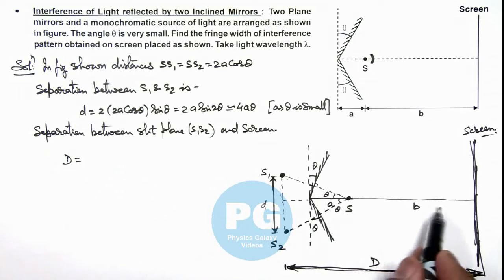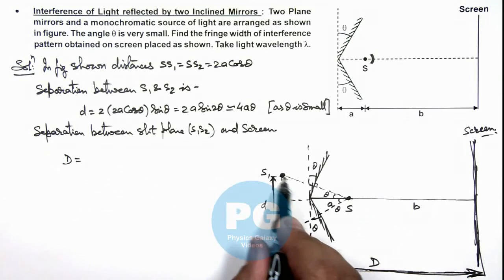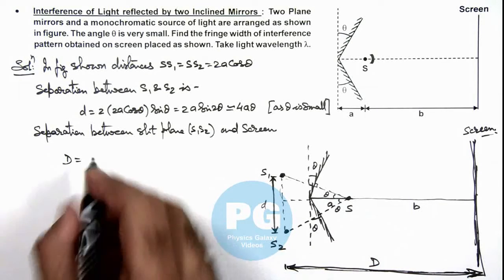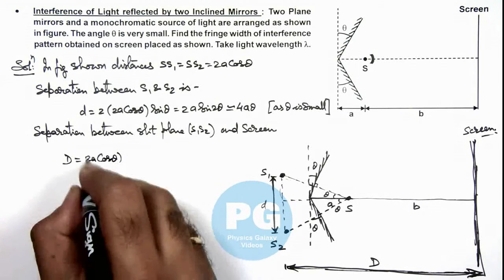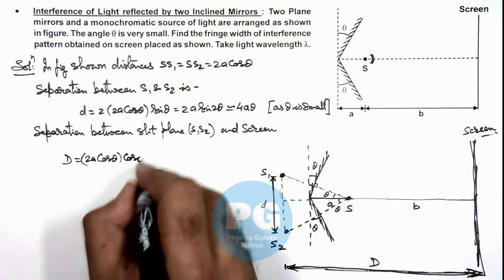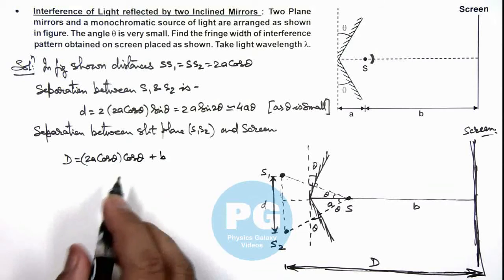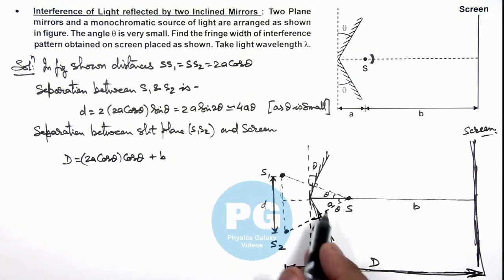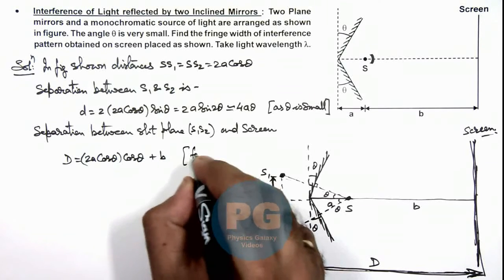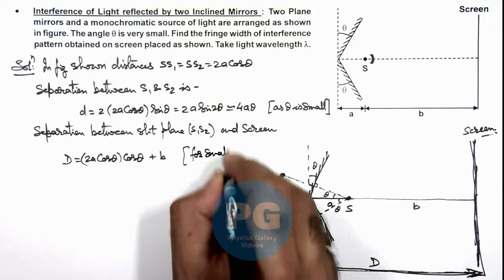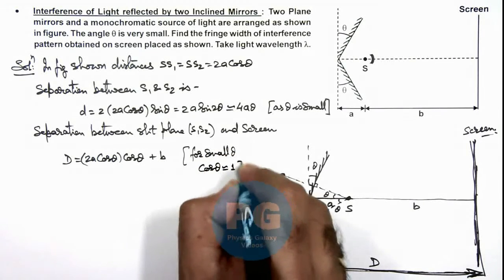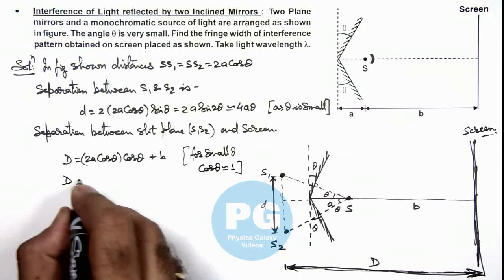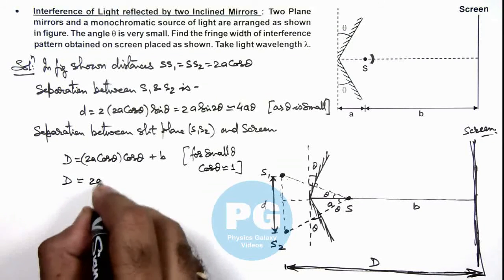This b plus this can be written as 2a cos theta times cos theta, so this can be written as 2a cos squared theta plus b. And for small theta we can neglect cos theta as this will be 1. So here we can write for small theta, we can write cos theta to be approximately equal to 1. The value of capital D we can approximate as 2a plus b.